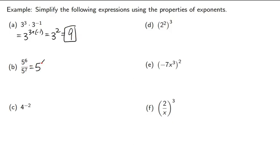This is division, so we need to subtract our exponents. 6 minus 7 is negative 1. And remember, that means 1 over 5 to the positive 1, which is just 1 fifth.